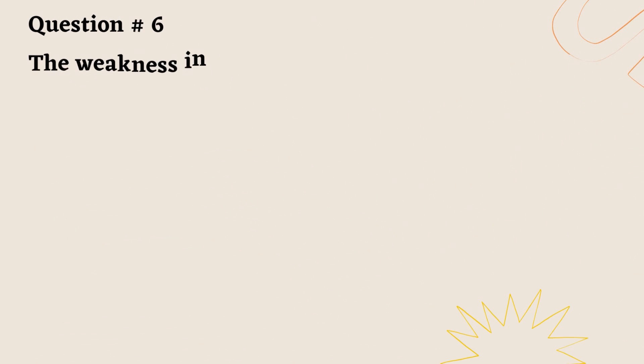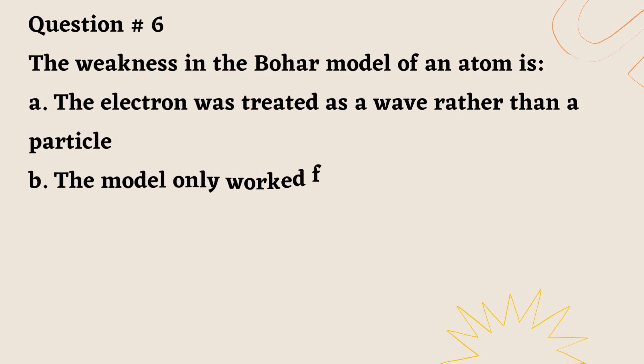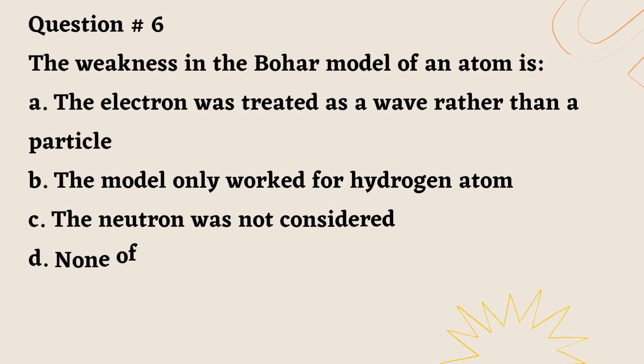Question number 6. The weakness in the Bohr model of an atom is: A. The electron was treated as a wave rather than a particle. B. The model only worked for hydrogen atom. C. The neutron was not considered. D. None of these. Correct option is B.